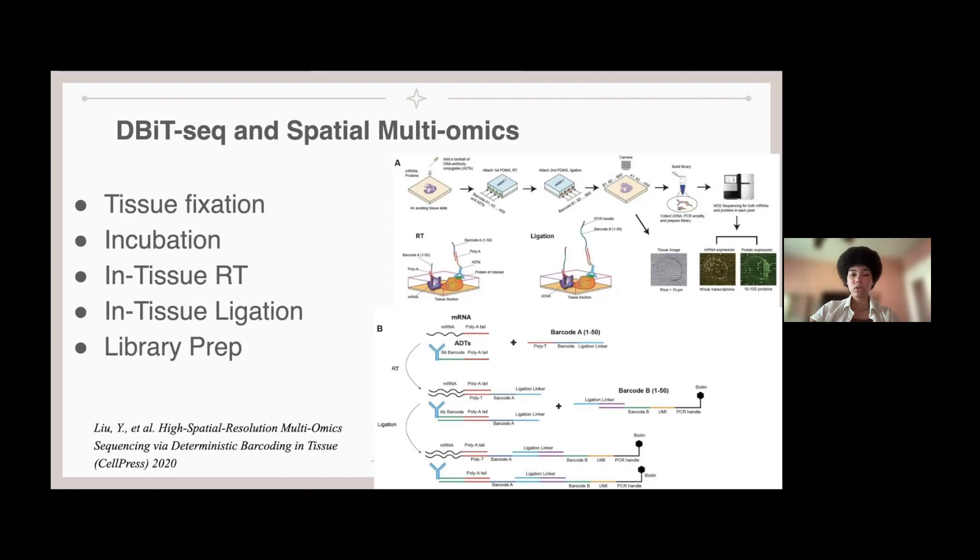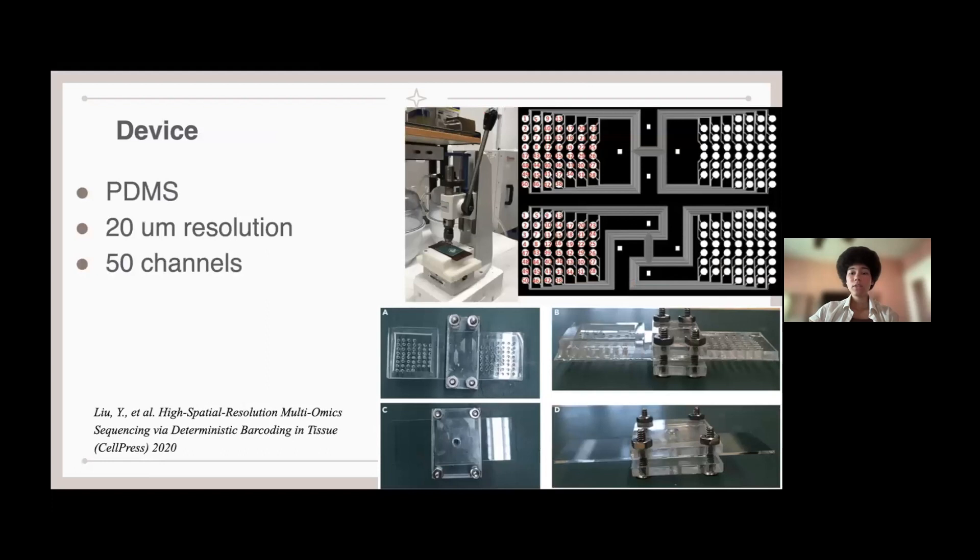And so these two diagrams, A and B, simply show the process I was explaining. Diagram A shows more of the actual process itself, the incorporation of the two barcodes and eventually the 2D array. The diagram B shows more of the chemistry of the reverse transcription and the ligation and the joining of these two barcodes.